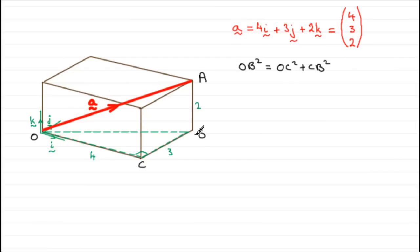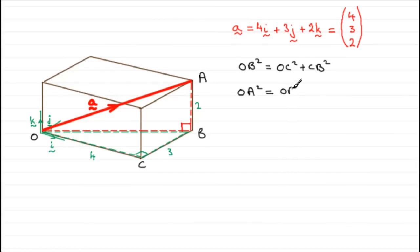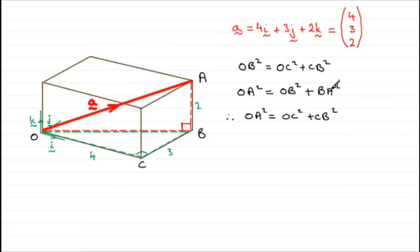Now that we've got OB squared, I can turn to a vertical triangle O, A, B. We can use Pythagoras' theorem here because OA is the hypotenuse of this vertical triangle OAB. So we know that OA squared is equal to OB squared plus BA squared. And we already know that OB squared is OC squared plus CB squared, so substituting that in, we have OA squared equals OC squared plus CB squared plus BA squared.